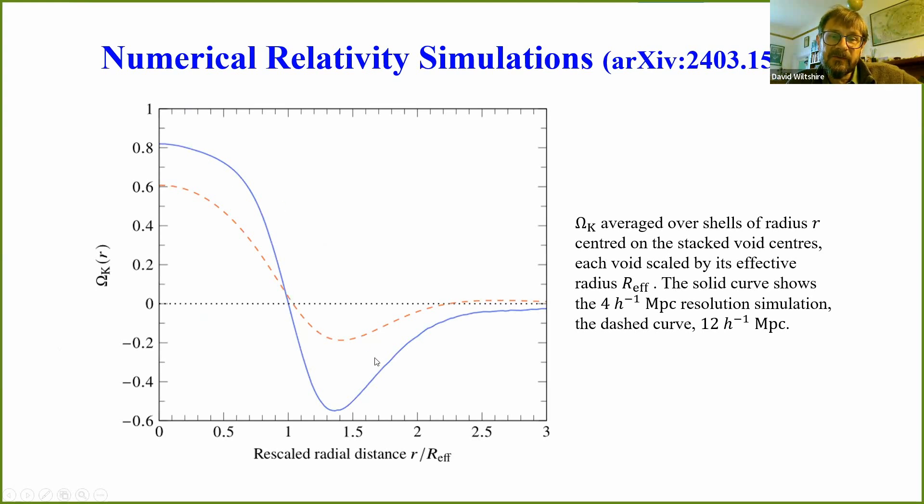What is important are the gradients, and when you look at those gradients, here the resolution scale is 4 over H megaparsecs, which is about the size of our finite infinity scale, because we're a thin filament in a void.